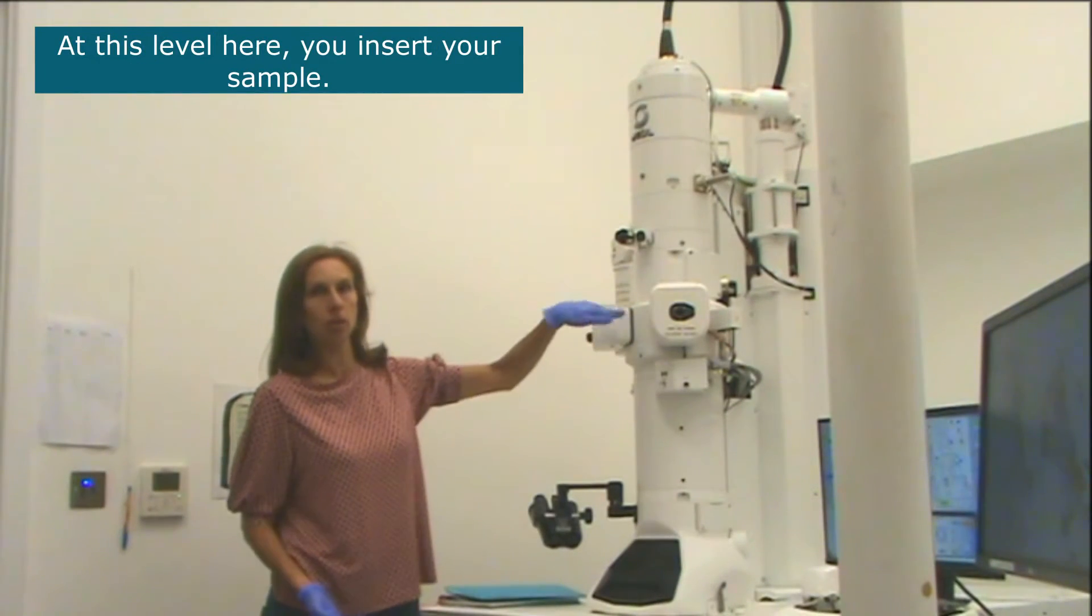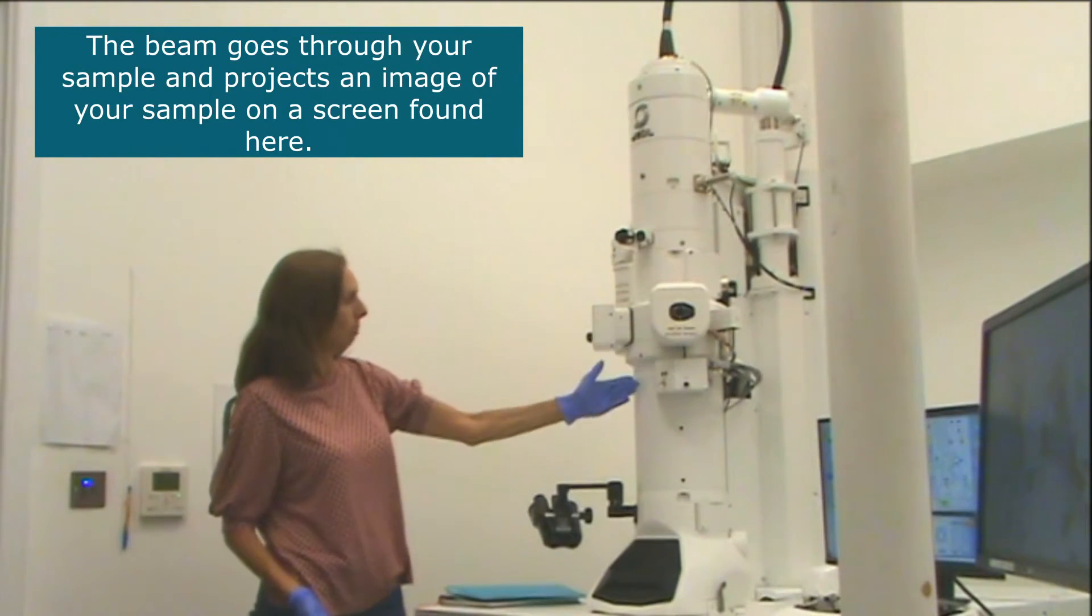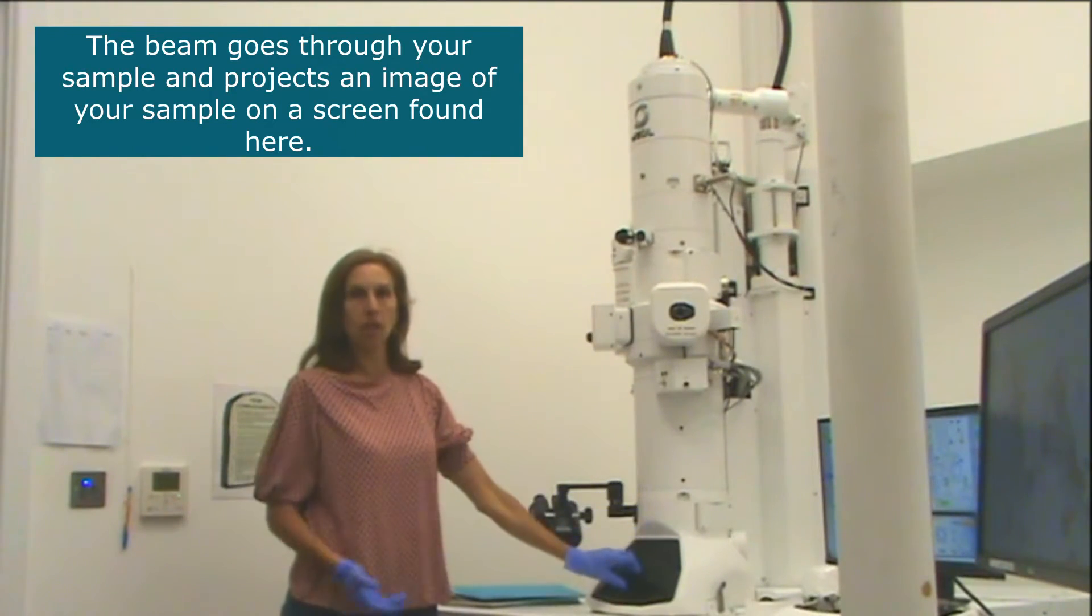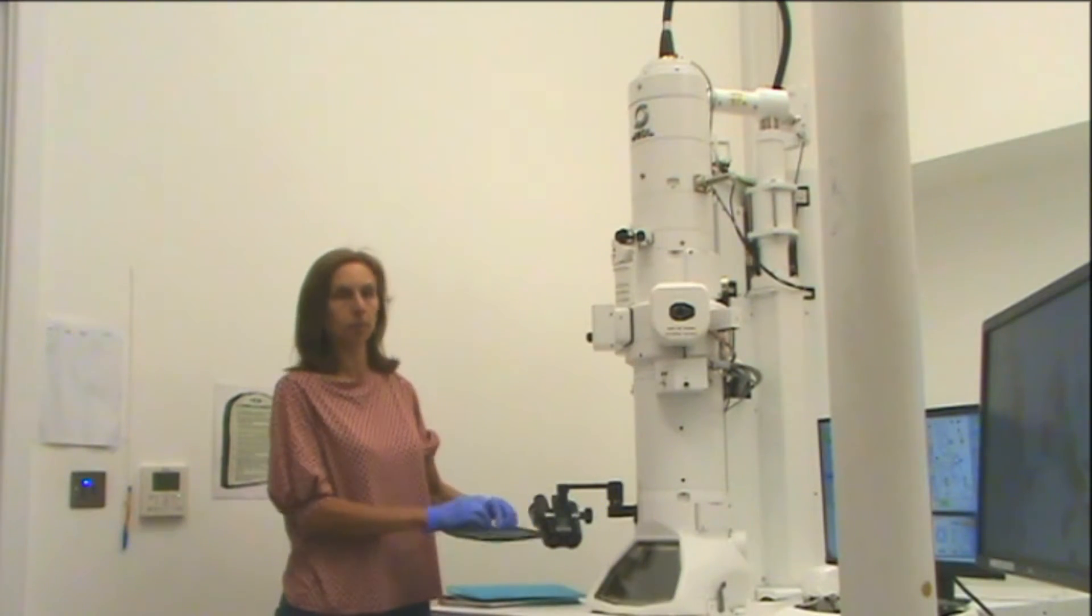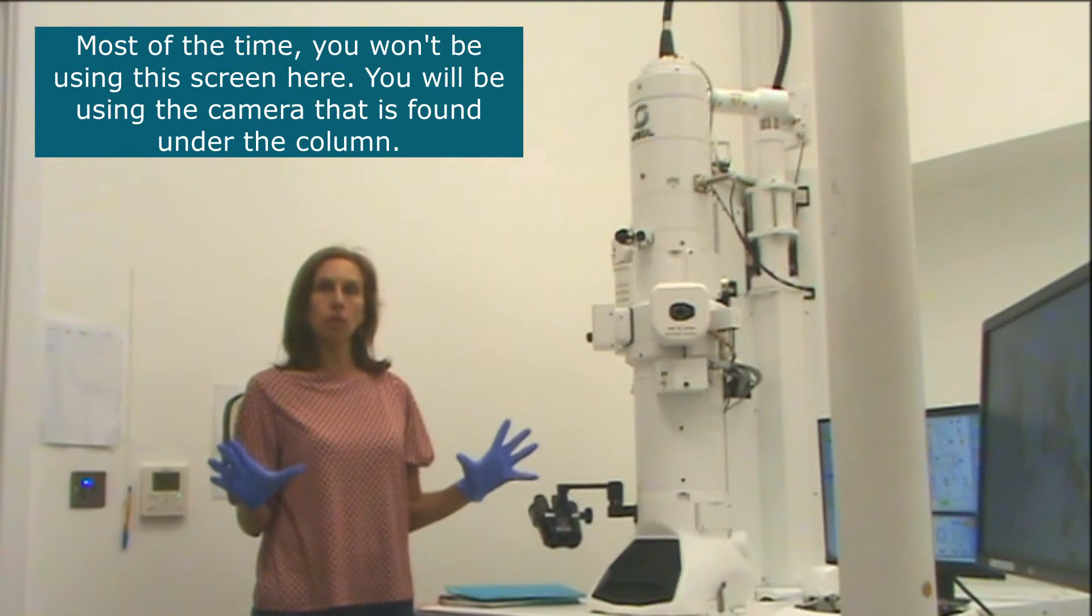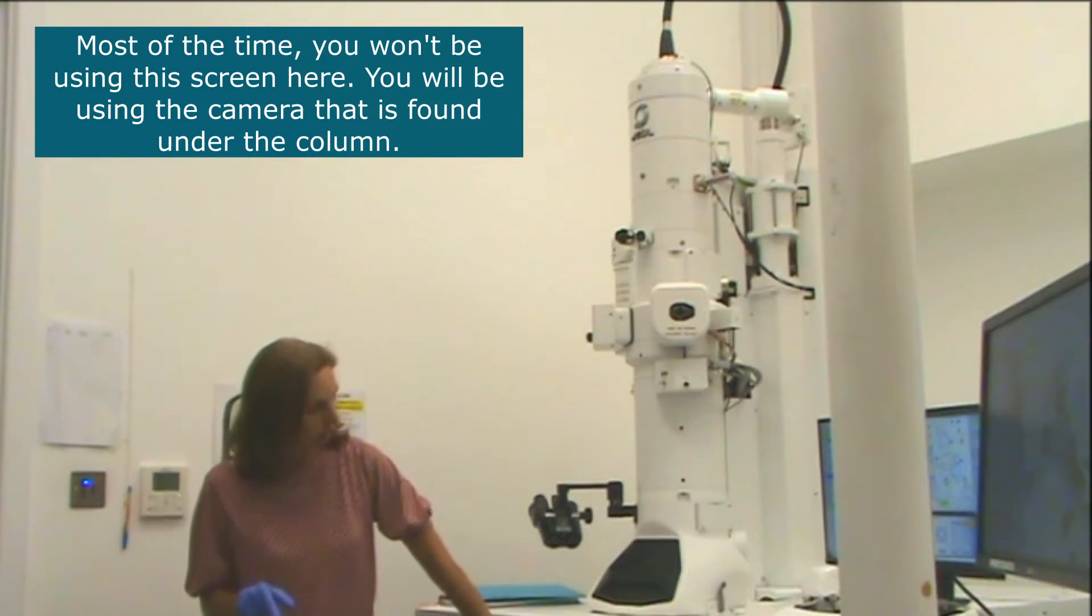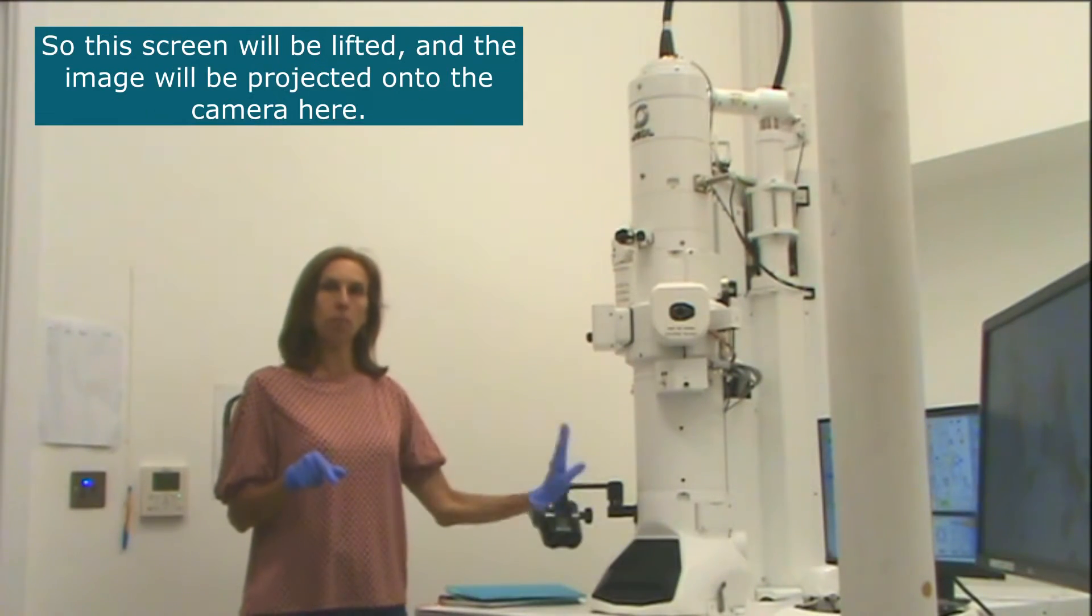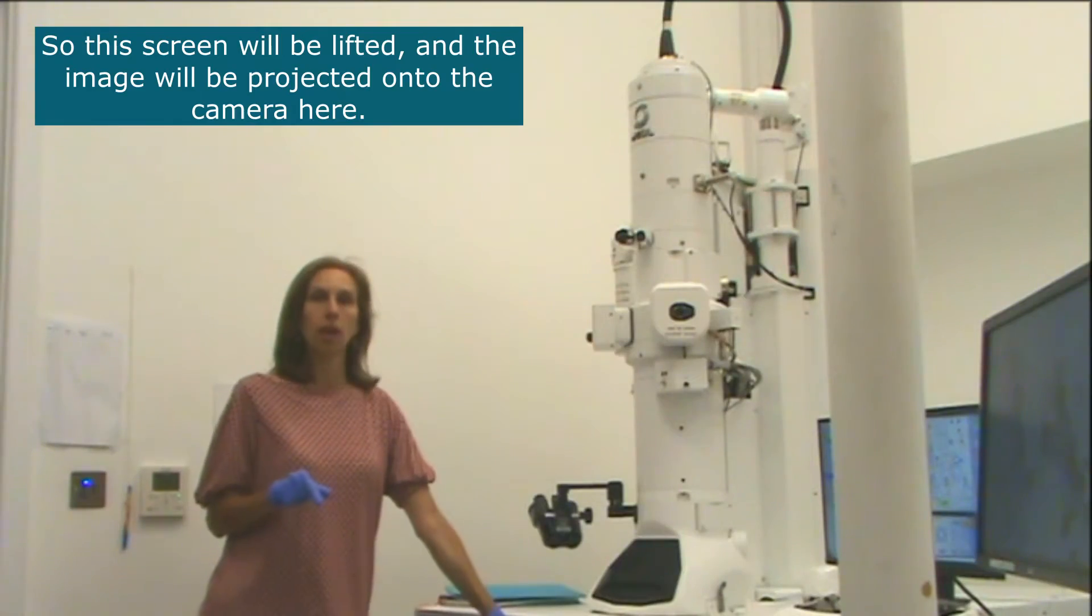At this level here you insert your sample so the beam goes through your sample and then it projects an image of your sample on a screen found here. Most of the time you will be using not this screen but the camera that is found under the microscope. So this screen will be lifted and then the image will be projected onto the camera here.